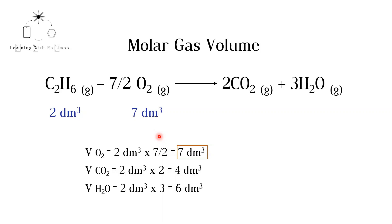The ratio between ethane and carbon dioxide is 1 to 2. Multiplying 2 decimeters cubed by 2, we get the volume of carbon dioxide produced. The ratio between ethane and water is 1 to 3. Multiplying 2 by 3, we get the volume of water produced.